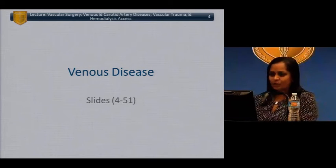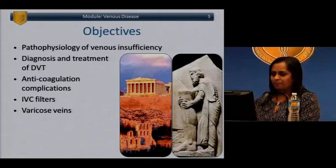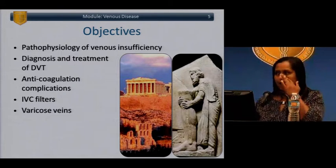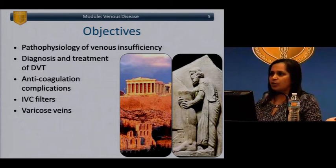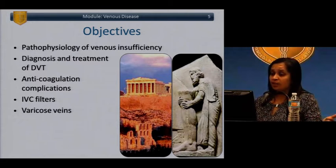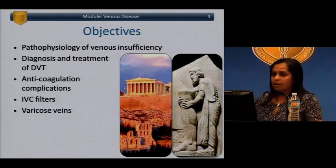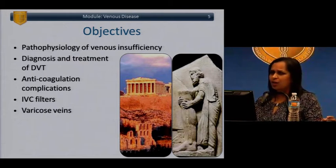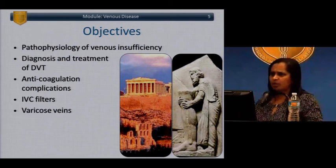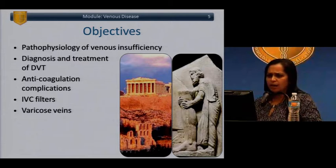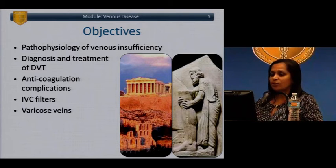We'll start with venous disease. I'd like to talk about the pathophysiology of venous insufficiency, which is probably one of the most common problems we encounter, diagnosis and treatment of deep vein thrombosis, anticoagulation and complications. You have a separate coagulation talk, so I won't spend too much time on the coagulation system itself. We'll also talk about IVC filters and varicose veins.